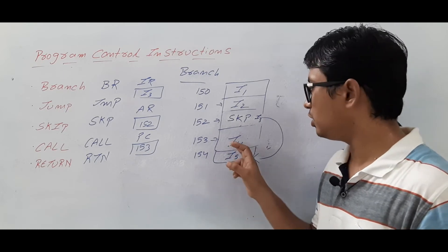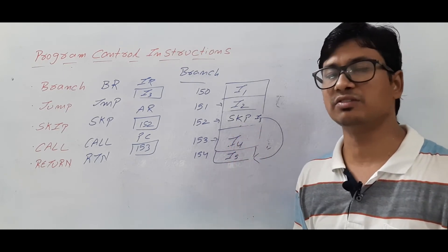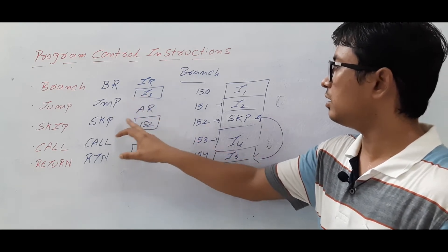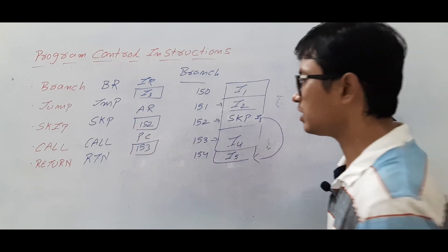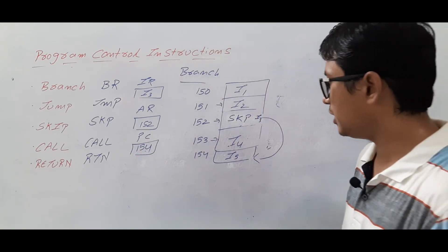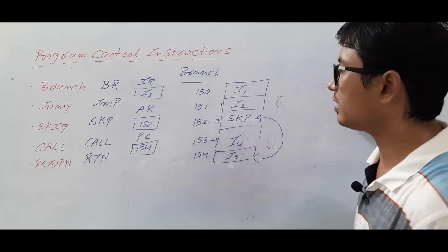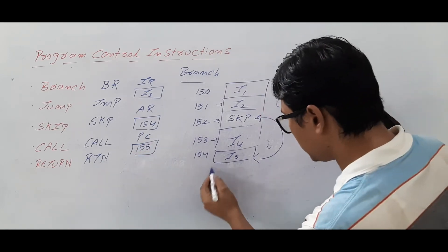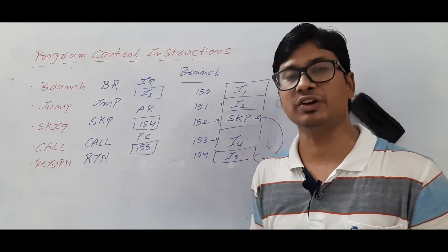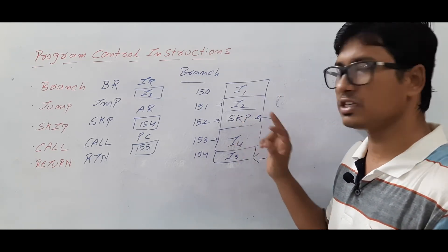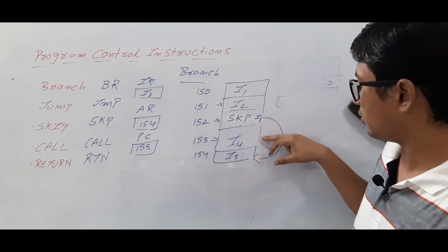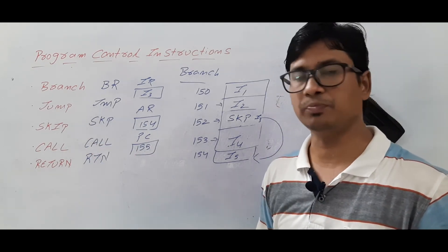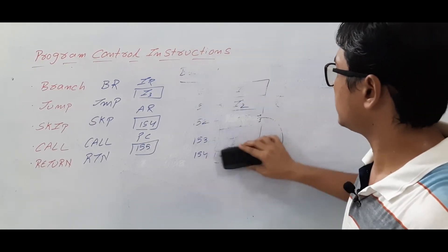So the next instruction is I4 but you will not execute it — you will execute instruction I5 instead. The program counter should not consist of 153; it should consist of 154. Once it is fetched, the address register will consist of 154 and the program counter will be modified to 155, because the next instruction to fetch is at 155. So if it is a skip instruction, it will not execute the next instruction — it will skip it and start executing from the instruction after that.